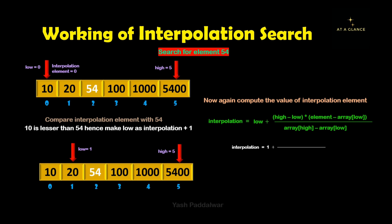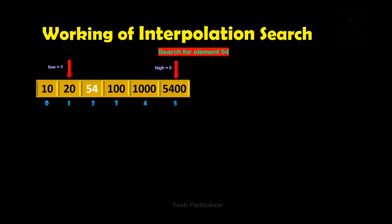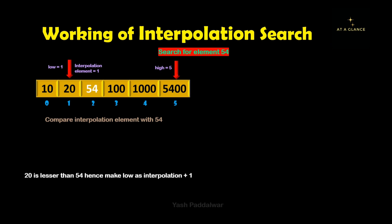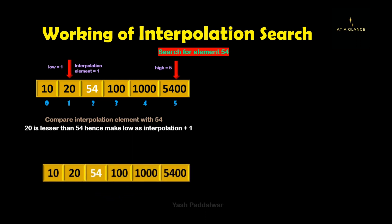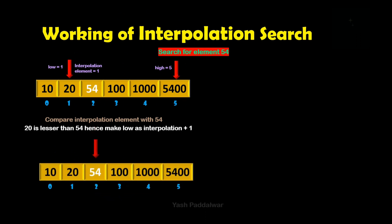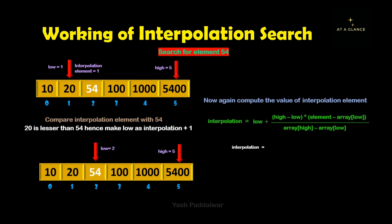Again compute the interpolation element's position using the formula. Plugging in the values, we get the interpolation element's position as 1. Again compare the interpolation element's position with the element to be searched. The element at the interpolation position is 20 and the element to be searched is 54. Clearly, 20 is less than 54. Therefore, we make low as interpolation plus 1, so our new low will be 1 plus 1 which is 2, and high remains as it is. Again computing the interpolation element's position, putting the values in the formula, we get the value as 2.